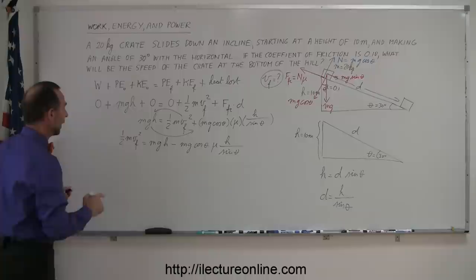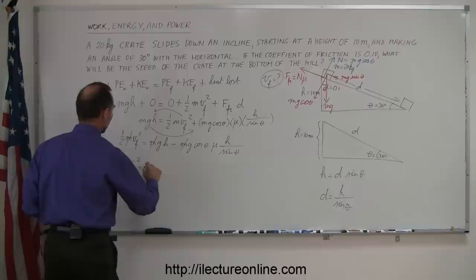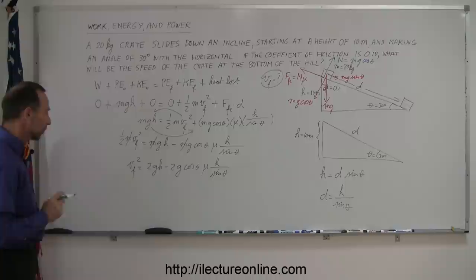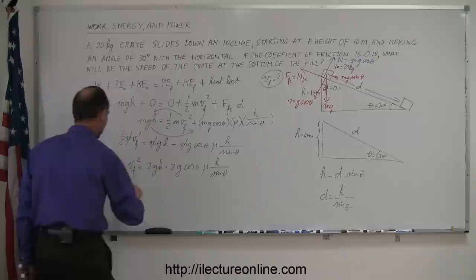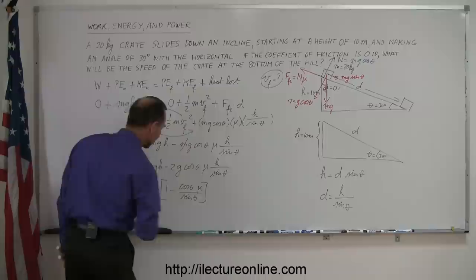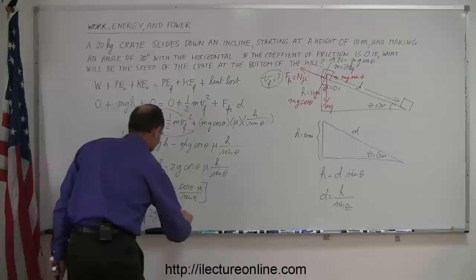Factoring out 2gh from the right side, v final squared equals 2gh times the quantity 1 minus cosine theta times mu divided by sine of theta. Taking the square root of both sides, v final equals the square root of 2gh times the quantity 1 minus cosine theta times mu divided by sine of theta. Without friction this term disappears, giving simply the square root of 2gh.